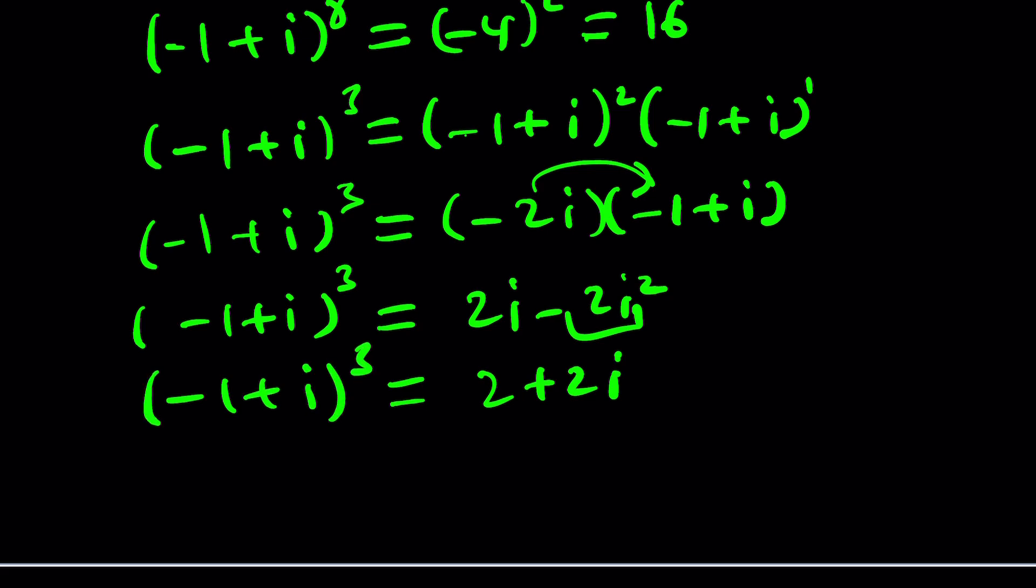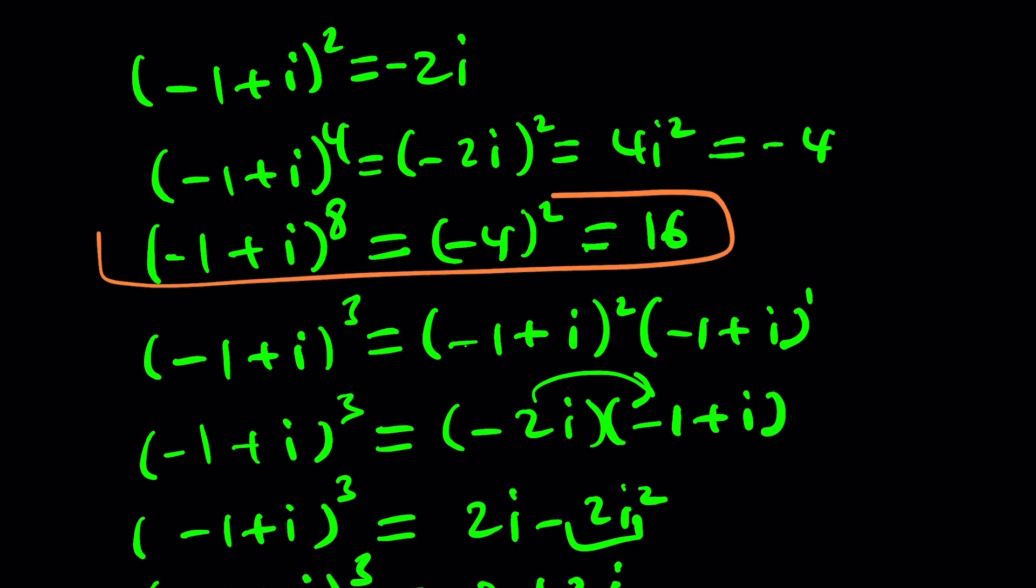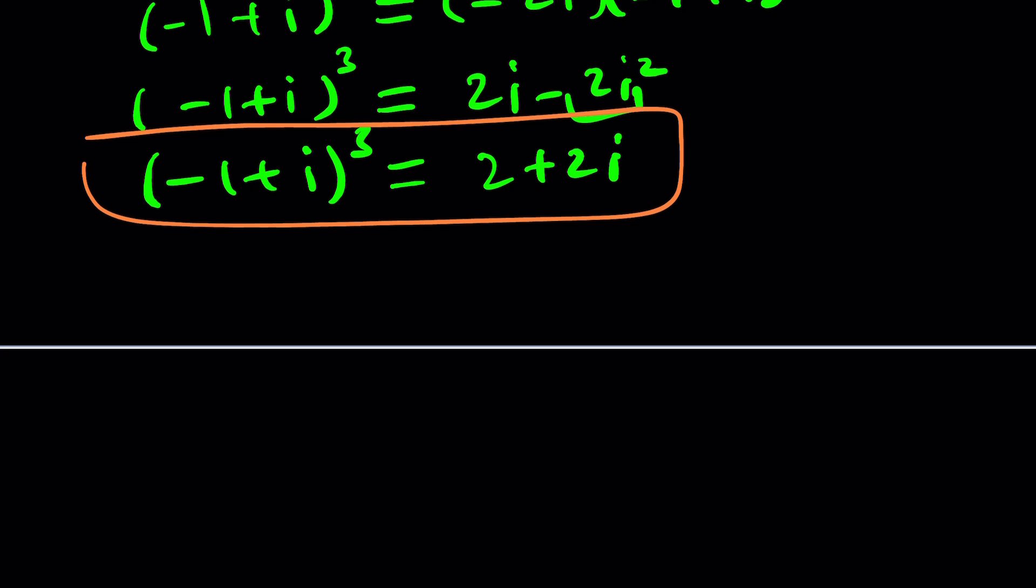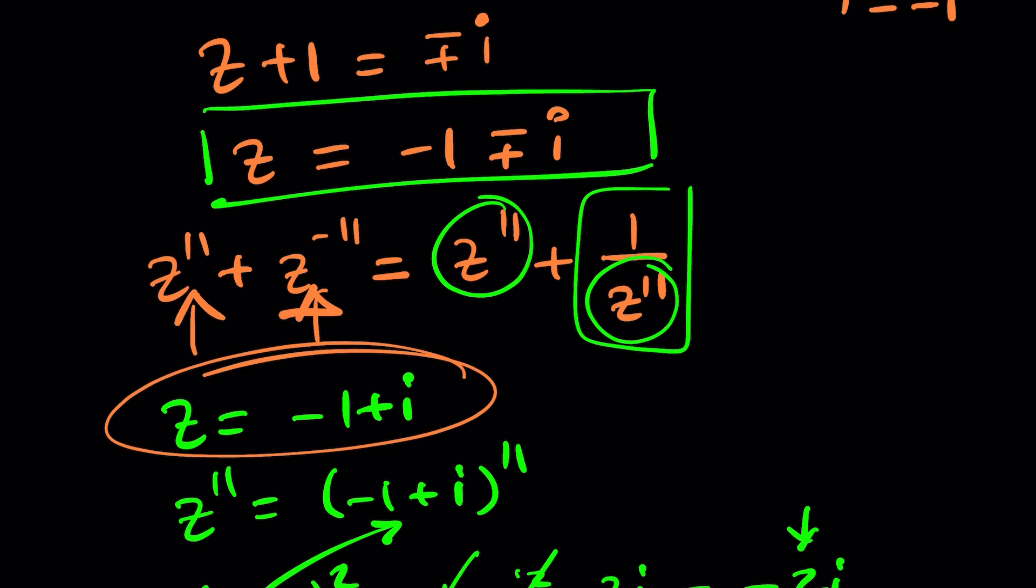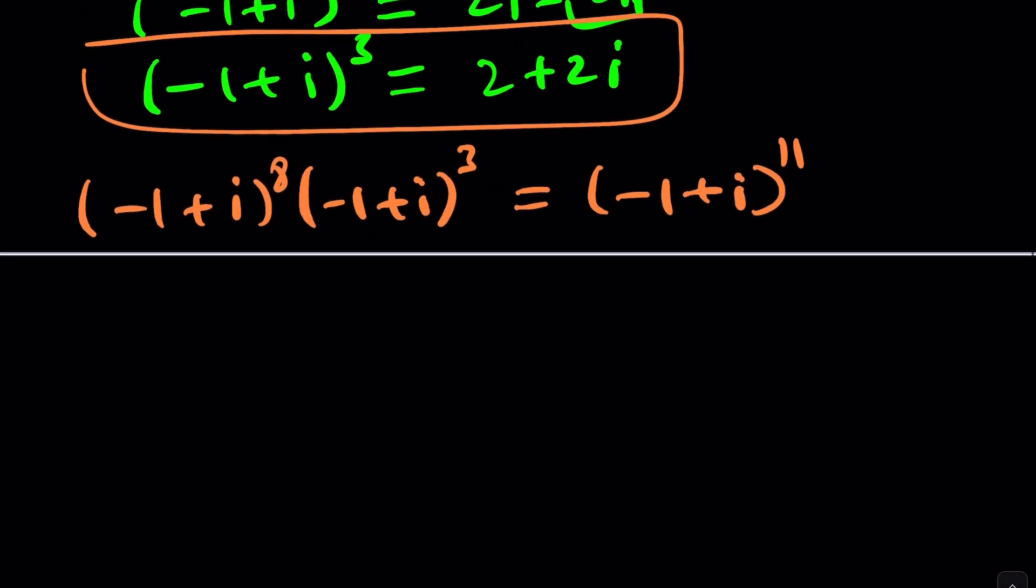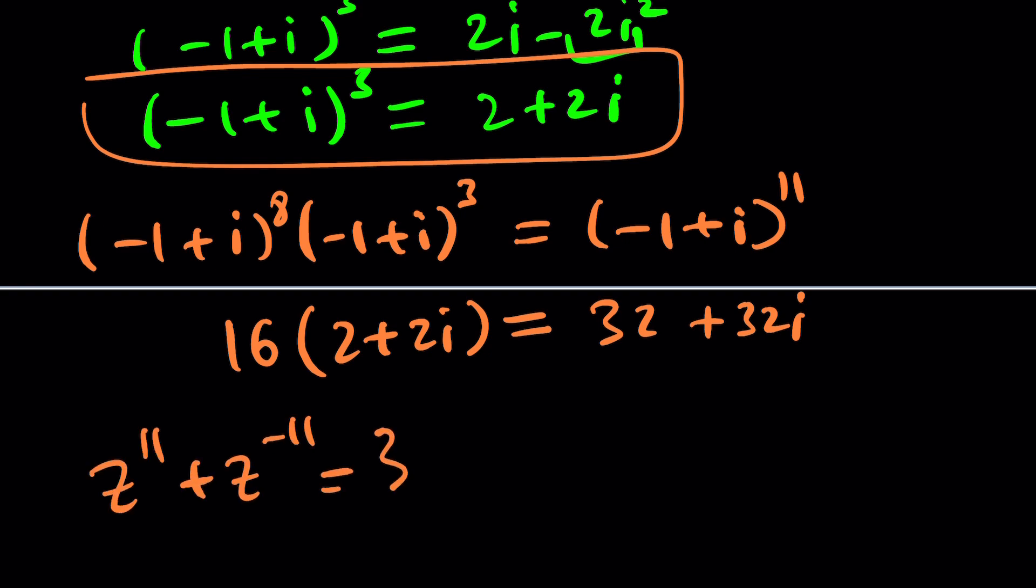But what does that have to do with the problem? Well, we have the 8th power, and we have the 3rd power. To get to 11th power, we can go ahead and multiply those. Yay! Now let's go ahead and multiply these together, because negative 1 plus i to the 8th power times negative 1 plus i to the 3rd power is going to give us negative 1 plus i to the 11th power. And then we need to find the reciprocal, which is easy to do. And where does that come from? It comes from z. Remember, z was this number. We are raising it to the 11th power. And then we're going to find this reciprocal and add them. So let's go ahead and see how this goes. The 8th power was 16, which is a real number. The 3rd power was 2 plus 2i. So this is going to be 32 plus 32i.